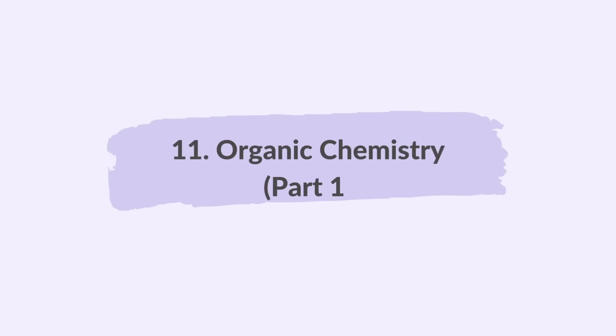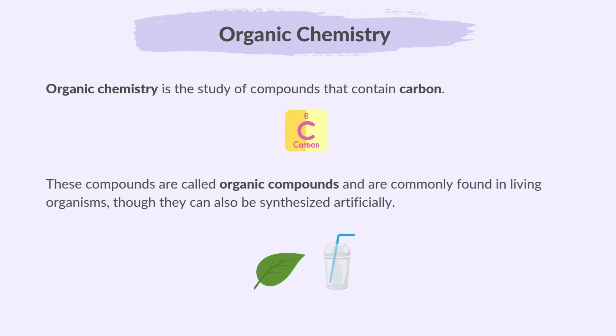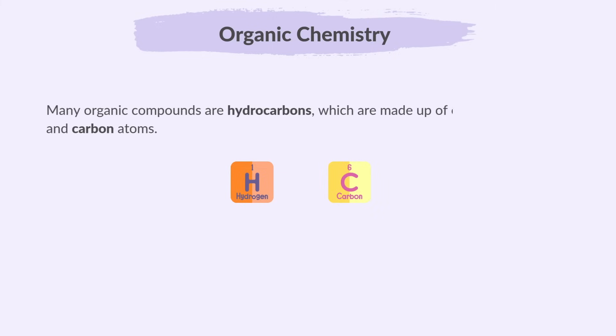In this video, you are going to learn Part 1 of Topic 11, Organic Chemistry. Organic Chemistry is the study of compounds that contain carbon. These compounds are called organic compounds and are commonly found in living organisms, though they can also be synthesized artificially. Many organic compounds are hydrocarbons, which are made up of only hydrogen and carbon atoms.